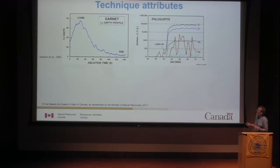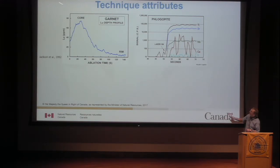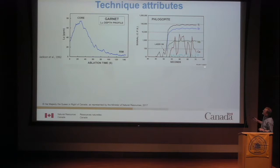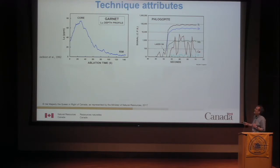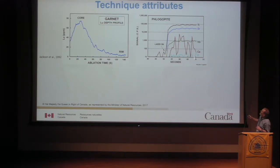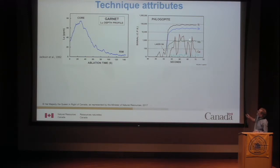One thing we can do is depth profiling, because we acquire data very rapidly as the laser penetrates down into the sample. Here's a depth profile of lutetium concentration in a strongly zoned garnet. We can also use these time-resolved spectra — signal against time — to say something about where elements are in a mineral. Here we have a phlogopite: you can see the signals for titanium, strontium, and niobium all tracking along, telling us those elements are substituted into the crystal lattice. But cerium is dancing about by a couple of orders of magnitude, telling us it's not substituted into the lattice at all. In this case, the cerium is sitting on the major cleavage planes — each time we ablated through a cleavage plane, the cerium leapt up.